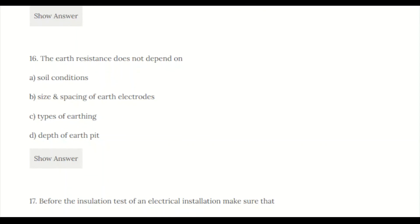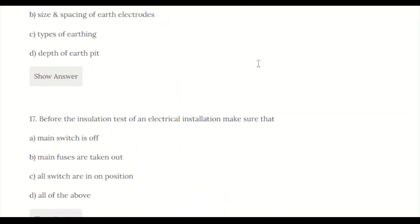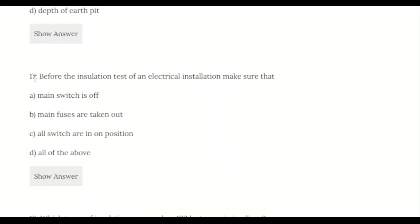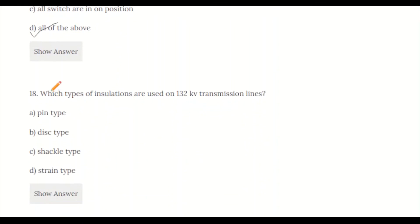Question 17: Before the installation test of an electrical installation, make sure that: a) main switch is off, b) main fuses are taken out, c) all switches are in open position, d) all of the above. Of course, all of the above is correct.